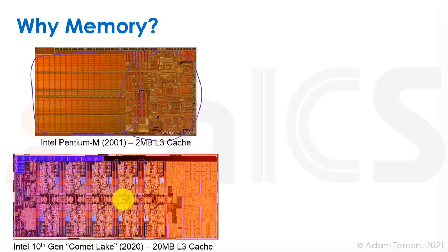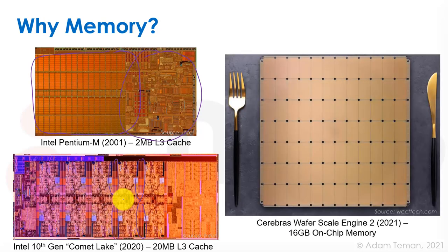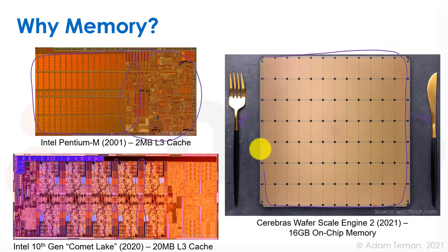An extreme example that just came out last month: Cerebras. They have what they call their wafer scale engine — the second version — and yes, this is a fork and this is a knife, and this is the chip. It's actually a whole wafer turned into one chip, and basically the reason for doing this is to get as much memory on-chip as possible. This monster has 16 gigabits of on-chip memory, which is several orders of magnitude more than any other chip, because this is actually many many chips somehow interleaved together.